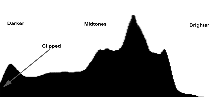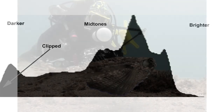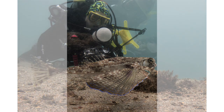This is a fairly balanced histogram. I've clipped some details to the left, but everything else looks okay. And this is the image it represents — my wife diving with a flying gurnard. I wasn't sure of the focus, white balance, or composition, but by checking my camera's histogram, I immediately knew I had a decent exposure. The blown-out details to the left represent her black wetsuit.